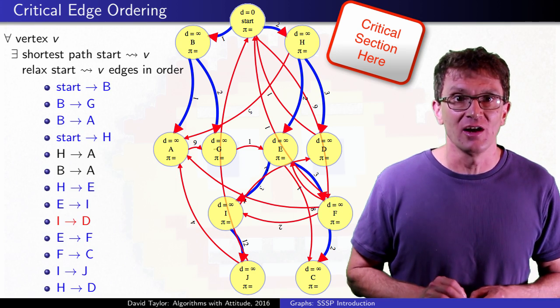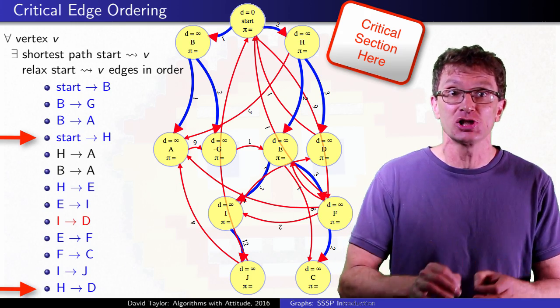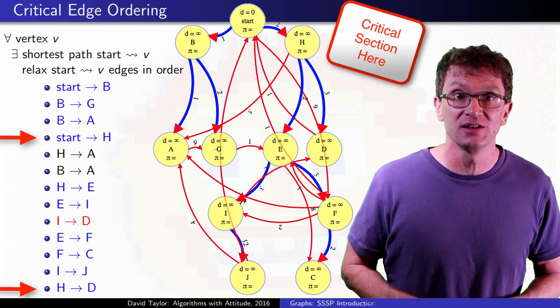And somewhere in my relaxations, I need to relax the start to H edge, and then the H to D edge, in that order to get the shortest path to D.